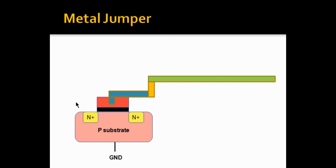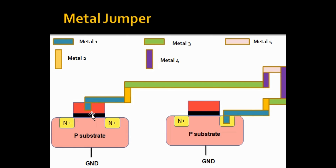As you can see, we have an nMOS here; this is the gate of the nMOS and this is the gate oxide. It is connected to some metals — Metal 1, Metal 2, and Metal 3. Metal 3 is quite long, meaning an antenna violation is going to occur in this metal. The complete circuit has this input connected to the output through Metal 3, connected further to Metal 4 and Metal 5.